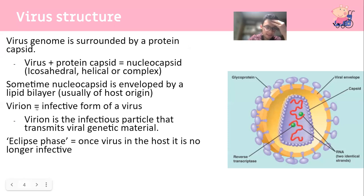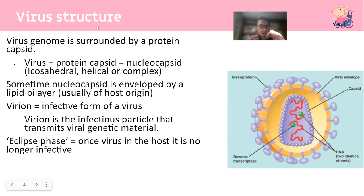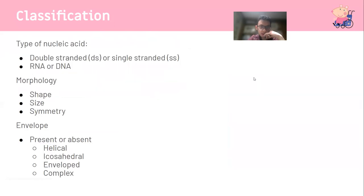A virion is the infective form of a virus - it can move from cell to cell, infecting and releasing its DNA material and building itself up. The eclipse phase is the phase once the virus is inside the host cell where it is no longer infective. As for whether you need to know the shape of each virus - I don't think it's worth it.